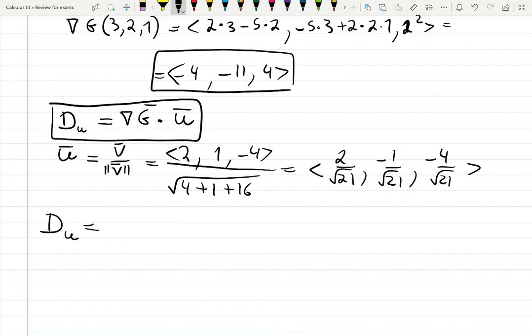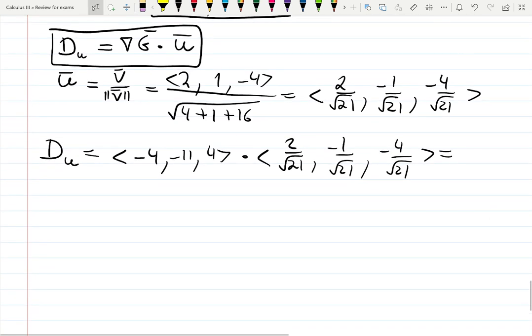Finally, the actual derivative D_u is going to be a product of the two vectors: <-4, -11, 4> times <2/√21, 1/√21, -4/√21>. This should not be a vector, the answer should be a number, it's a dot product.